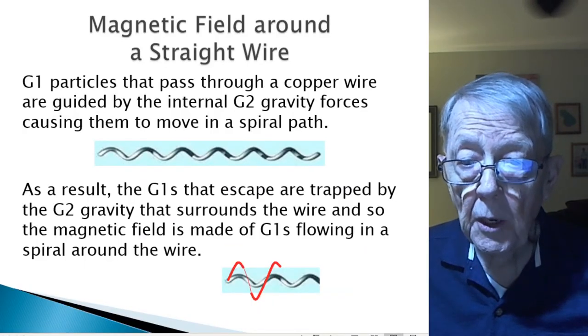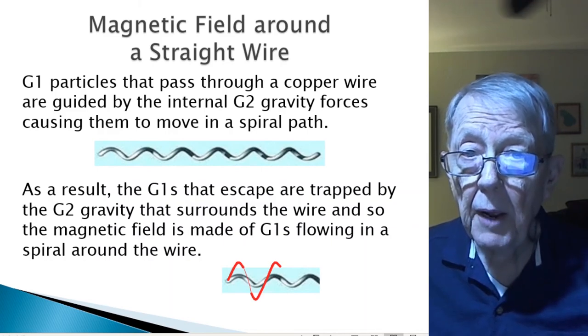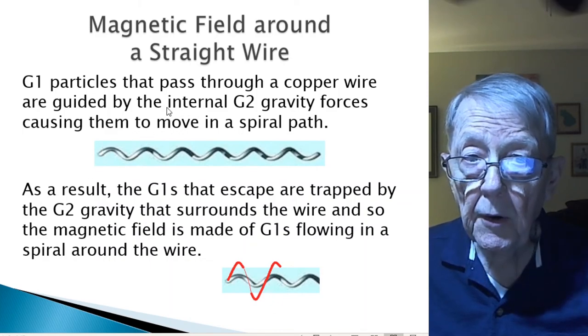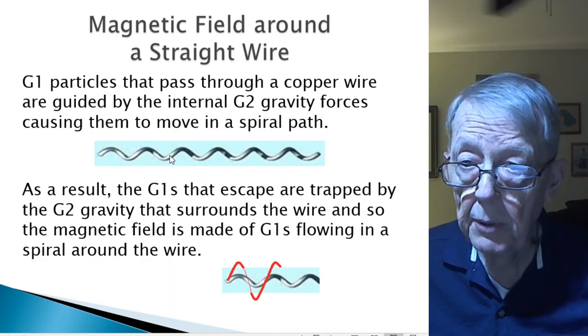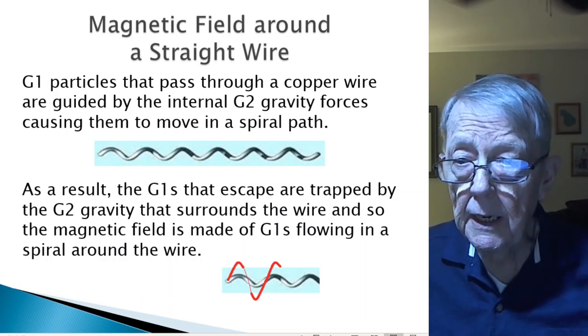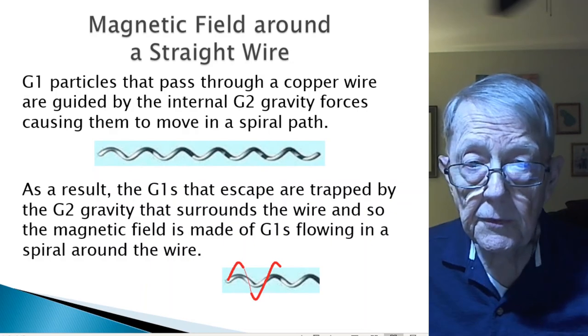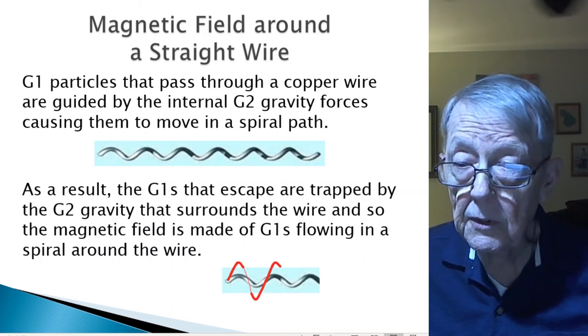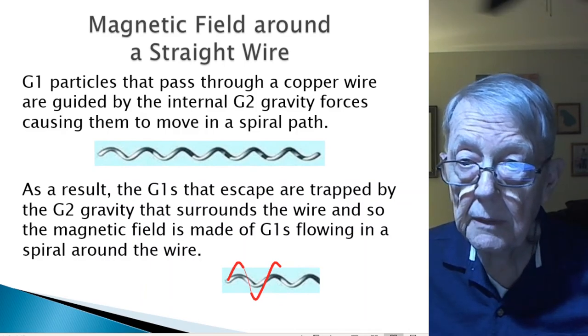I've stated this any number of times, but it's always worth stating again. This is about how a magnetic field is generated. G1 particles that pass through a copper wire are guided by the internal G2 gravity forces, causing them to move in a spiral path. Yes, that's a corkscrew. But the copper wire is well-ordered. When we make it as a conductor for conducting G1s, it doesn't go through straight. It flies through like an asteroid flies through our galaxy.